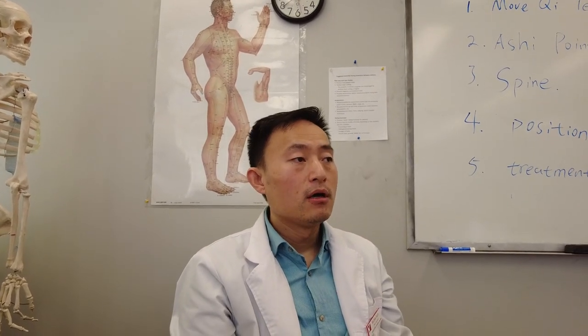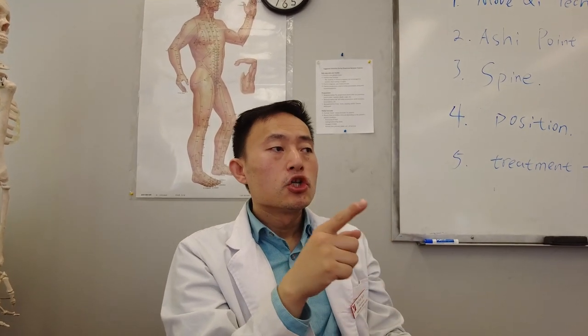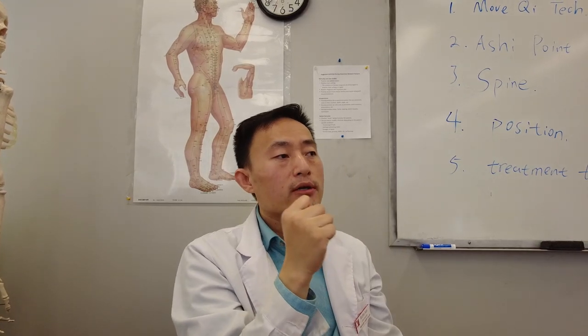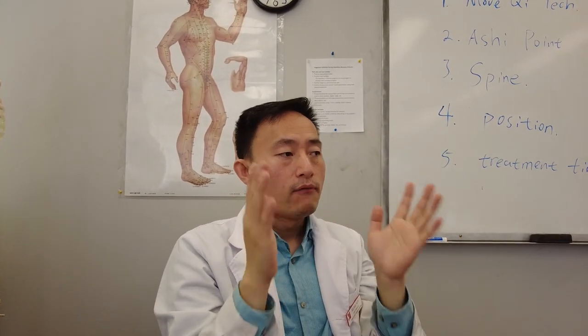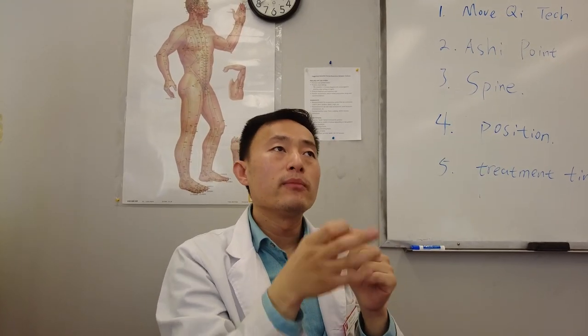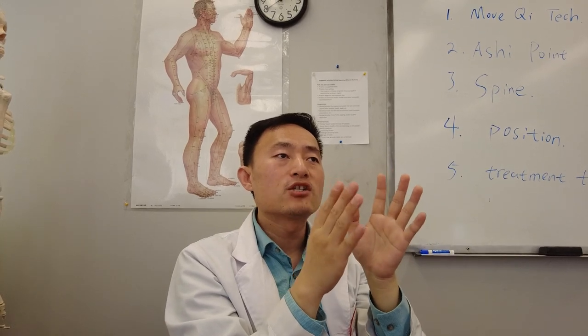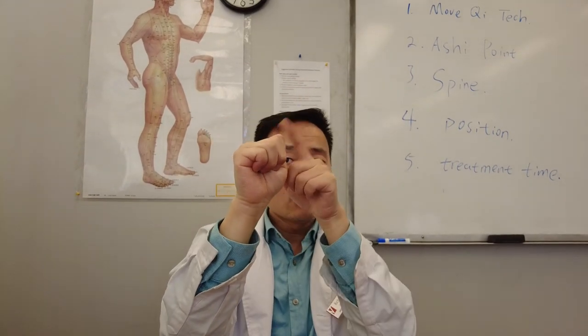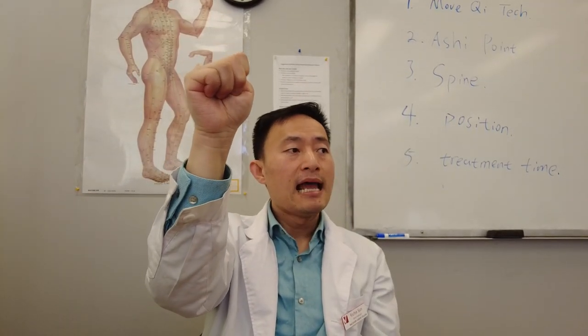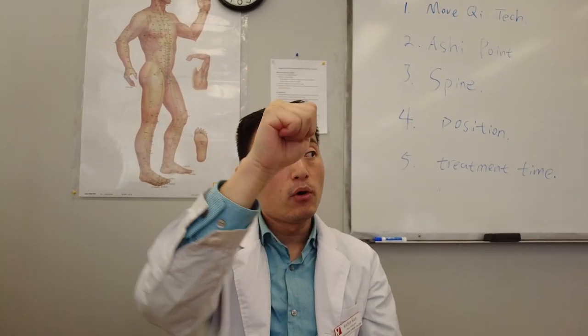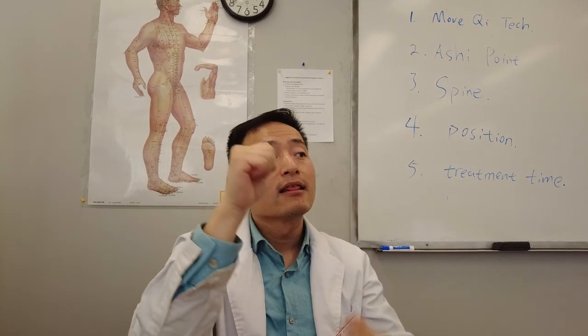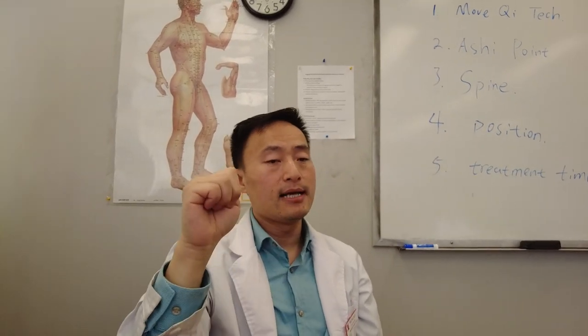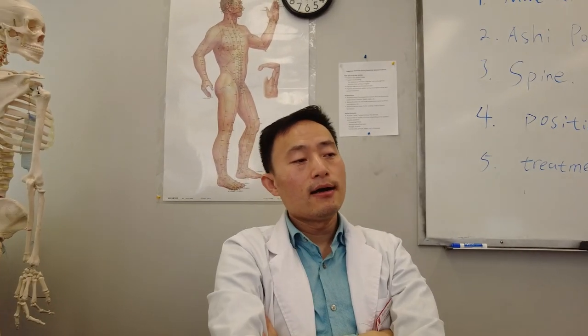The second technique for locating the ashi point is using your knuckle. I recommend female therapists especially use the knuckle, since finger force alone may not be strong enough. Use the knuckle of the index finger, make a fist, and apply force from the whole arm. This gives firm, strong stimulation and makes it much easier to locate the ashi point.